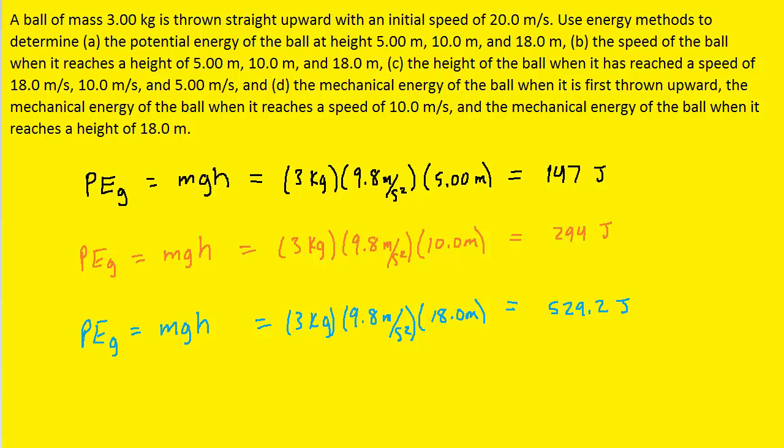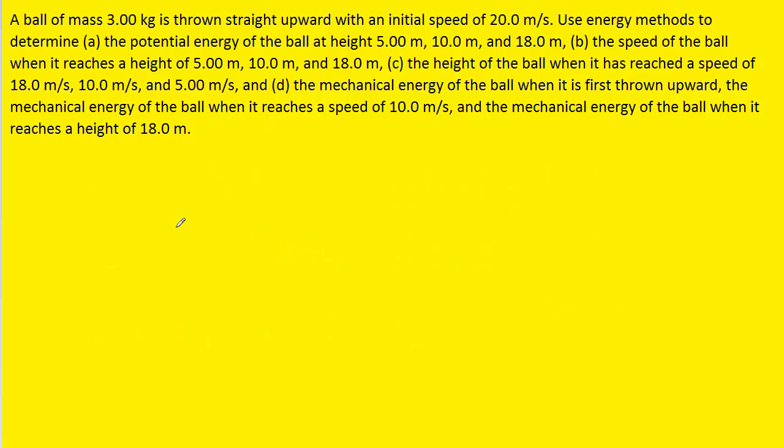After we have these potential energies, we can move on to part B, which asks us to find the speed of the ball when it reaches these three heights. To understand how to calculate that, we need to look at the conservation of mechanical energy.